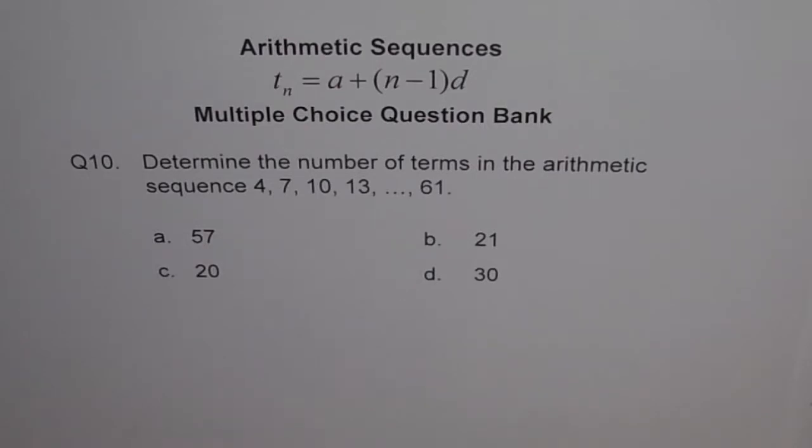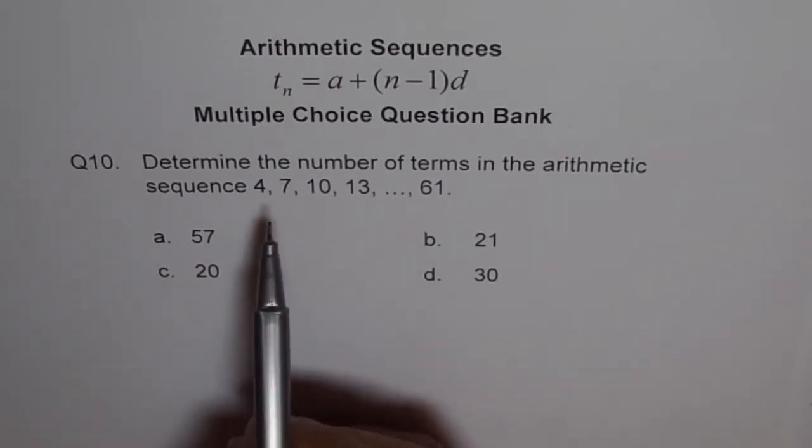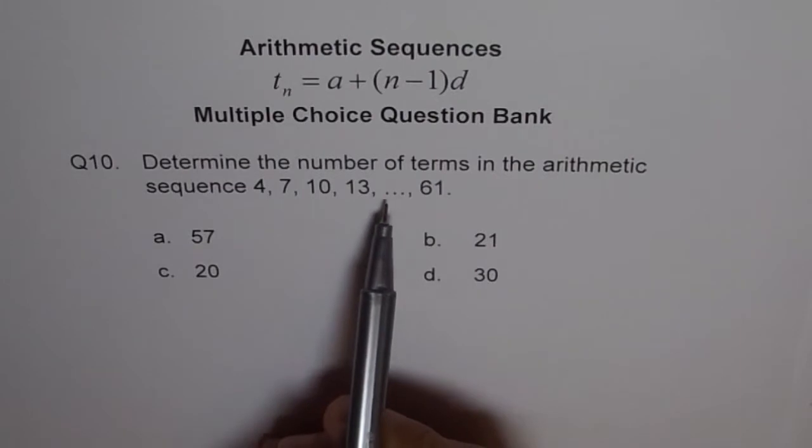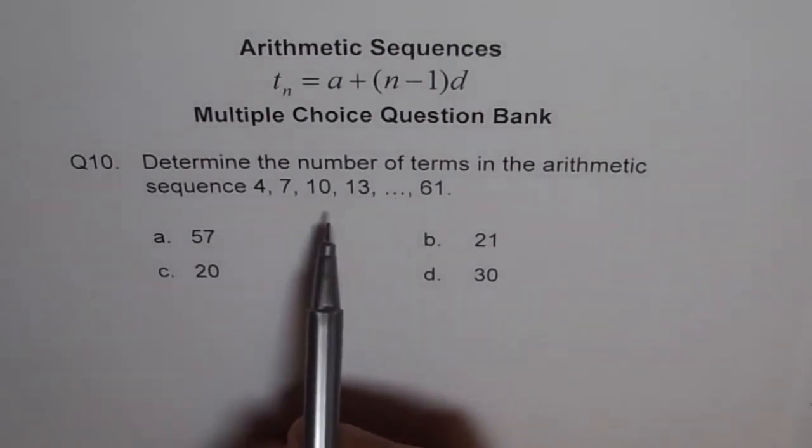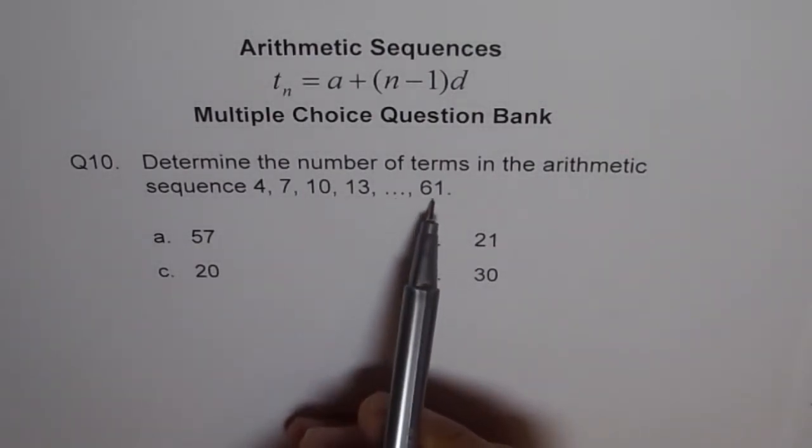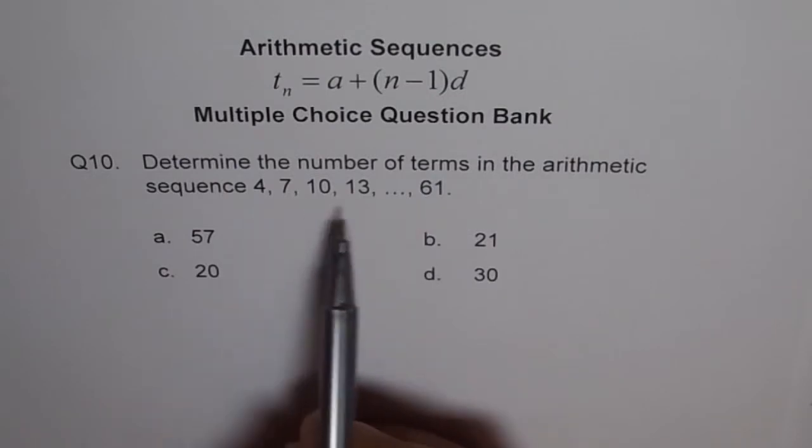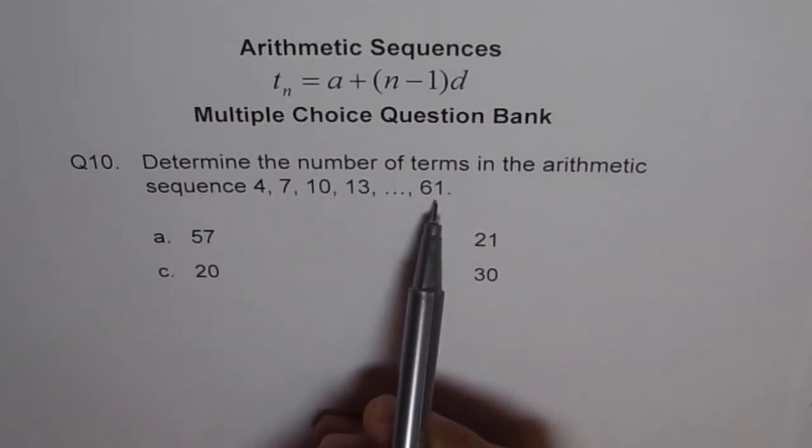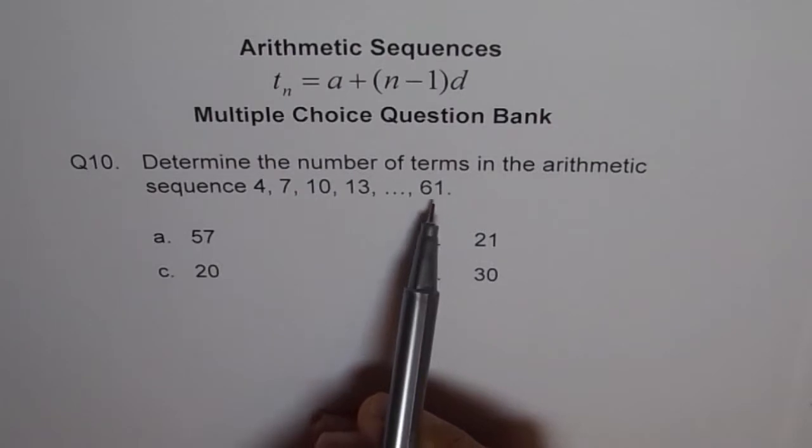So this is kind of a different question. Here we are given a couple of terms, in between we don't know how many, but we are given the last term. So it is a finite arithmetic series where the last term is given to us, and we want to figure out what that term number is.